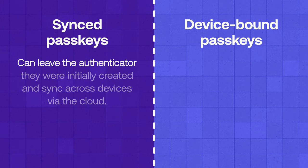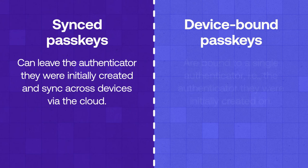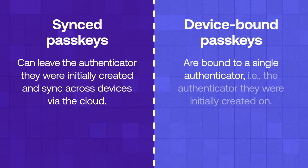Officially, there are two types of passkeys: sync passkeys and device-bound passkeys. Sync passkeys can leave the authenticator they were initially created on and sync to other devices via the cloud — they are end-to-end encrypted and synced across all user devices using the same provider. Previously called multi-device passkeys, that term is no longer used. Device-bound passkeys are bound to a single authenticator and cannot leave it — think of a security key like a YubiKey. These were formerly called single-device passkeys, but that term is also no longer used.